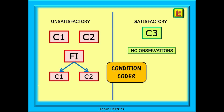Any C1 or C2 code will automatically deem the installation unsatisfactory, as will an FI, or further investigation code, as this may lead to a C1 or a C2. Only C3s or no observations at all will allow us to class the installation as satisfactory. An unsatisfactory installation can continue in use at the customer's risk — not the inspector's — if the customer takes appropriate steps to control the risk until the problem is repaired or dealt with. Such repairs must be carried out in a timely fashion.